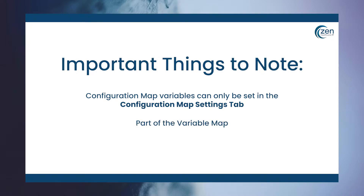The configuration map can be referenced like other variable map types like global maps, response maps, channel maps, source maps, etc. A full list of the variable maps can be found in the MirthConnect user guide, which we'll put a link to in the description below. Or you can reach out to the Zen team on which variable map type best fits your workflow.